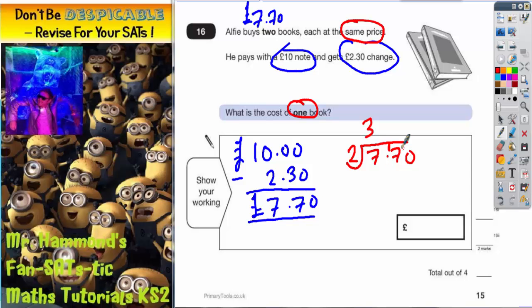...so that now makes seventeen. Twos into seventeen goes eight - twos is sixteen with one remainder that now makes ten. Twos into ten goes five with no remainder. You need a decimal point in there, so it's three pound eighty five.